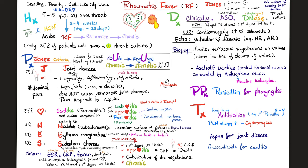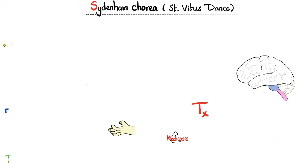Prevention: If bacterial pharyngitis is diagnosed early, take penicillin to avert rheumatic fever. Treatment of acute rheumatic fever: antibiotics — usually penicillin G (or penicillin V), long-term. If allergic to penicillin, use erythromycin. For joint pain, take aspirin, which works beautifully. For carditis, glucocorticoids may alleviate symptoms due to their anti-inflammatory and immunosuppressive effects.